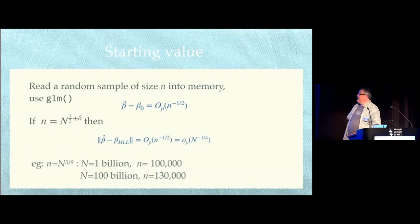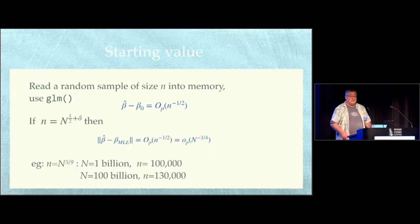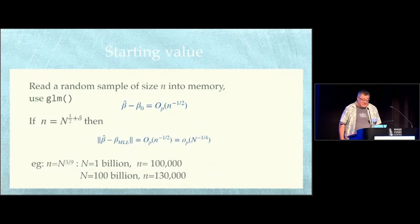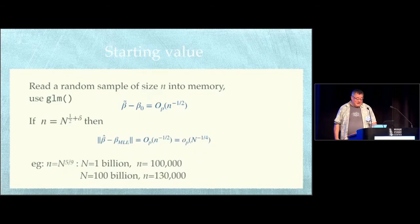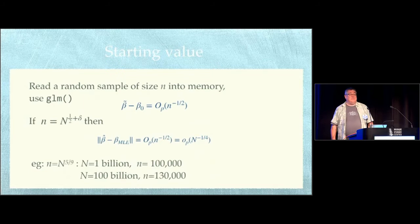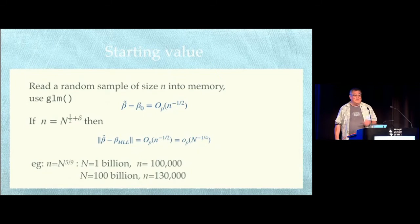So what we're going to do is start with reading a random sample of size small n into memory, use the GLM function to fit the model to it, and then do a one-step update. Now, if the small sample is bigger than the square root of the size of the large sample, then that's going to be good enough. So if the large sample is a billion, the small sample can be a hundred thousand, which is quite manageable. If the large sample is a hundred billion, the small sample can be a hundred and thirty thousand, which again is quite manageable.